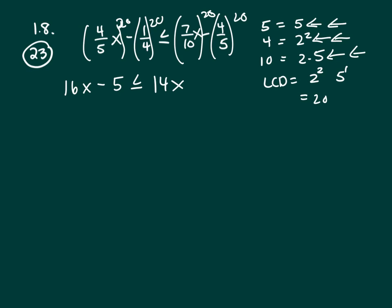10 will go into 20 twice. 2 times 7 is 14. Minus 5 will go into 20 4 times, that's 16.